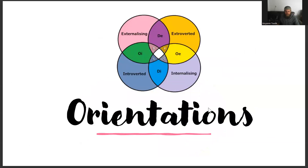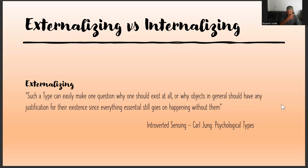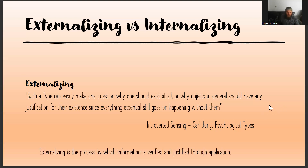Now I'm going to talk about the orientations — introverted, extroverted, externalizing, and internalizing. Let's get a good definition for externalizing. I found that Jung was already talking about externalizing when it comes to functions. Introverted sensing is an introverted function, but it is externalizing. This is what he had to say: such a type can easily make one question why one should exist at all, or why objects in general should have any justification for their existence, since everything essential still goes on happening without them. What's the purpose of things? It's looking at how information can be applied, and if it's not applicable, then it's not relevant. That's essentially the externalization process: applying information and seeing how it plays out. Externalizing is the process by which information is verified and justified through application.